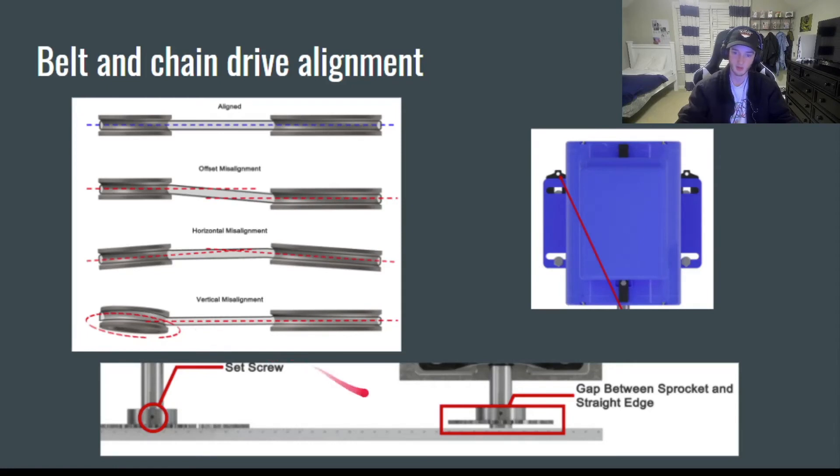And what you're looking for when you align your belt and chain drives? There's a proper way. This is what the proper alignment looks like. This is what offset misalignment looks like. Horizontal misalignment, vertical misalignment. You get the idea.